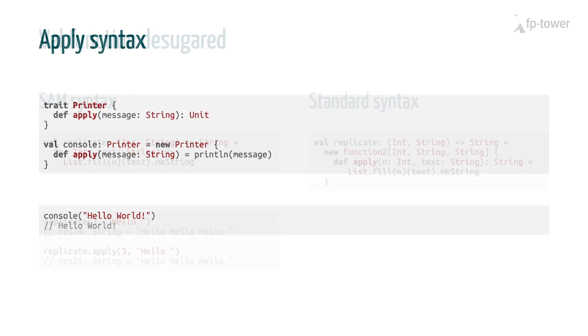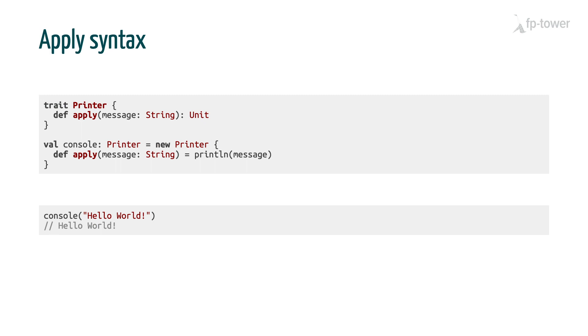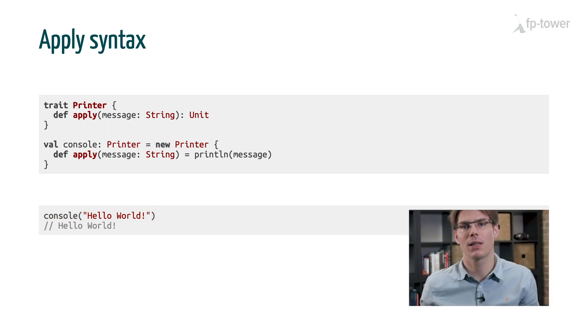For instance, in printer, if we rename the print method apply, and we create an instance called console, then we can say console hello world, and it will call the apply method of printer automatically. This can be quite convenient when we want to create a concise DSL for our domain, but at the same time we have to be careful not to overuse it, as it can make our code less readable.